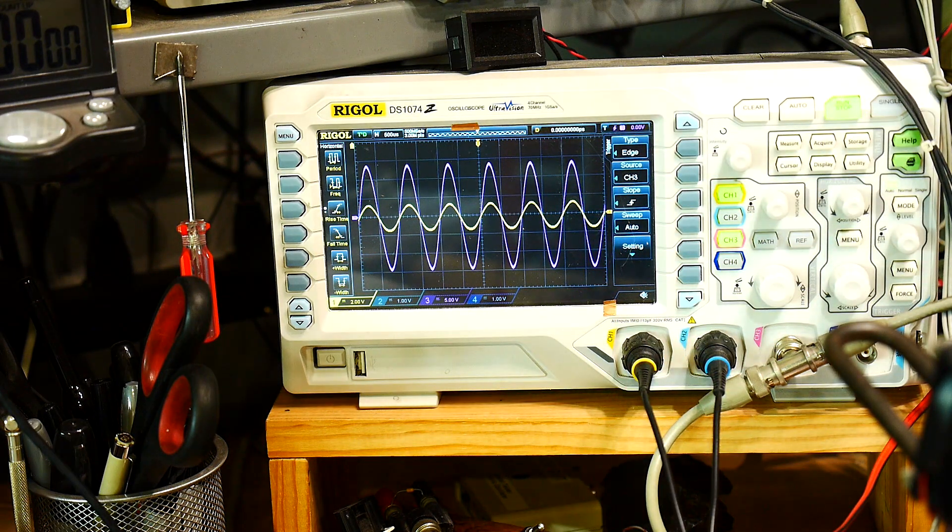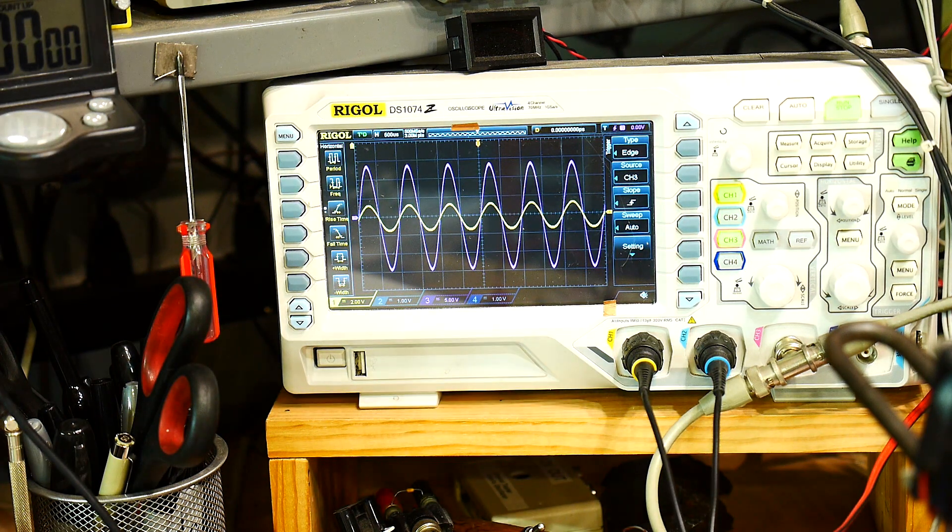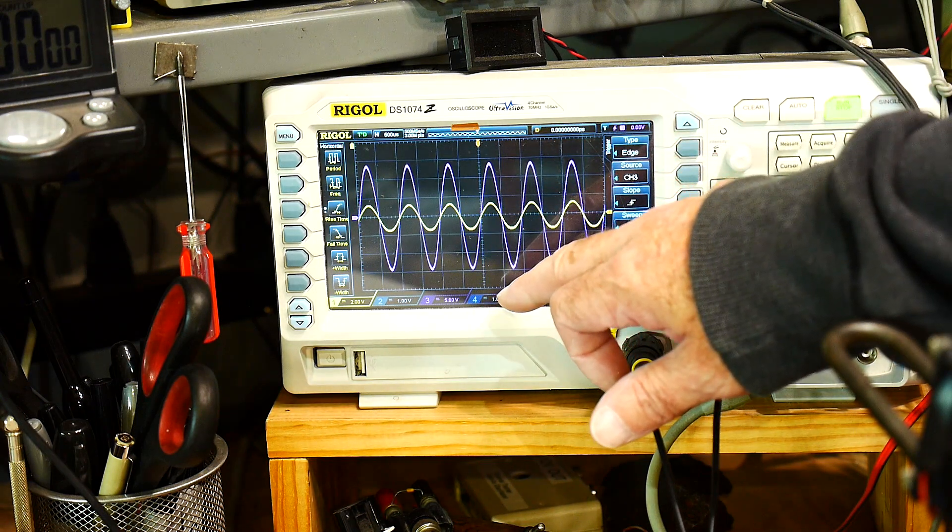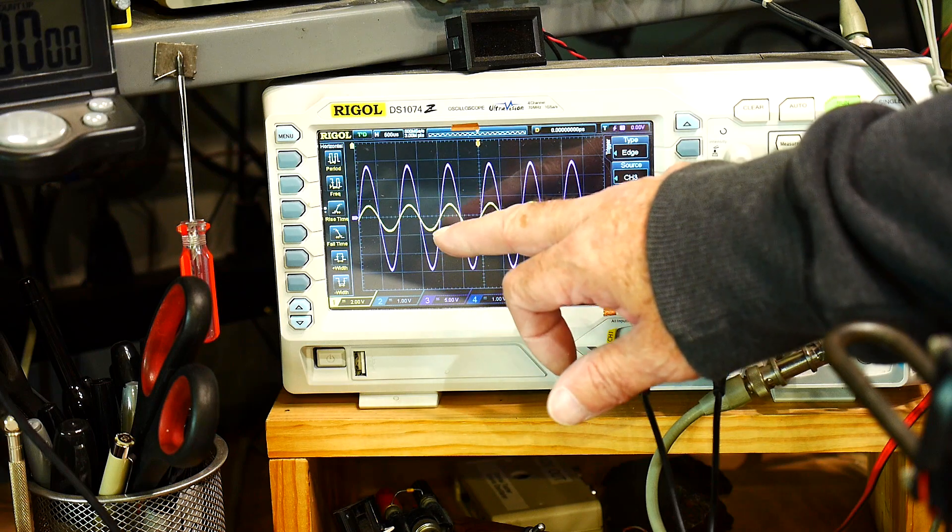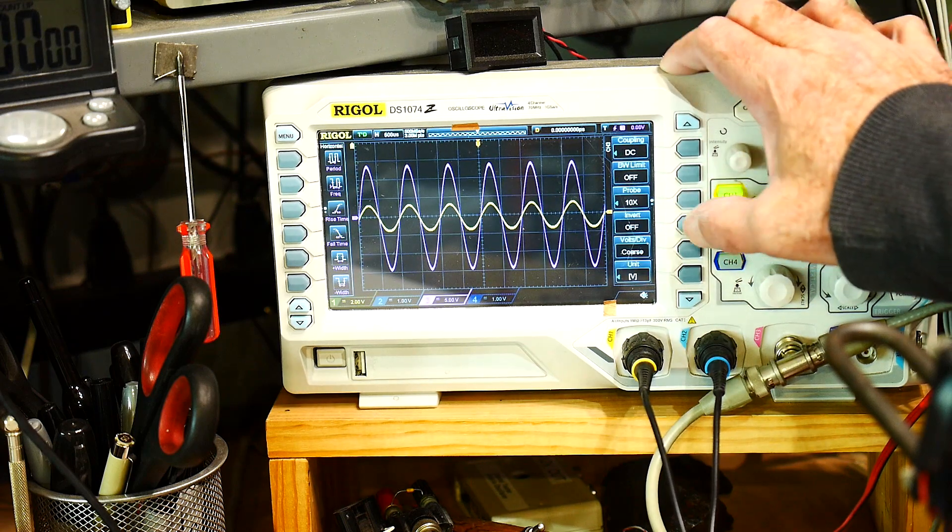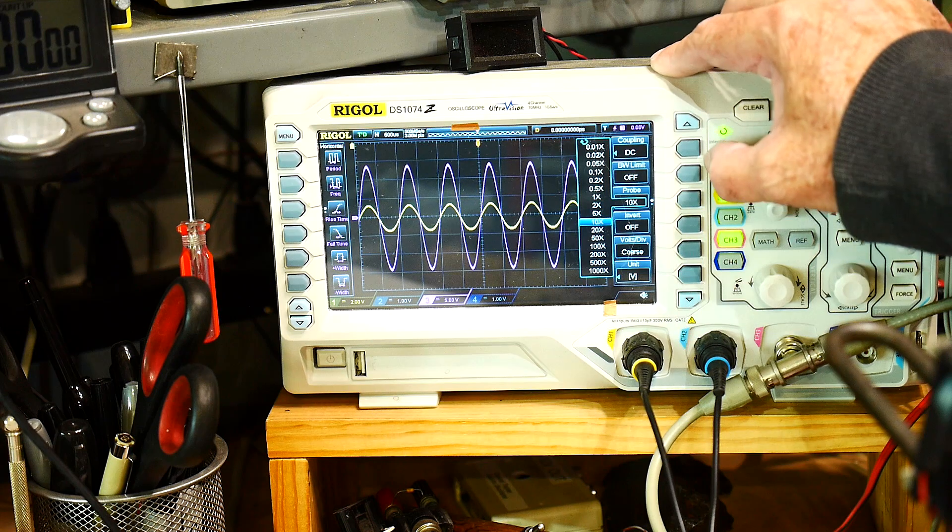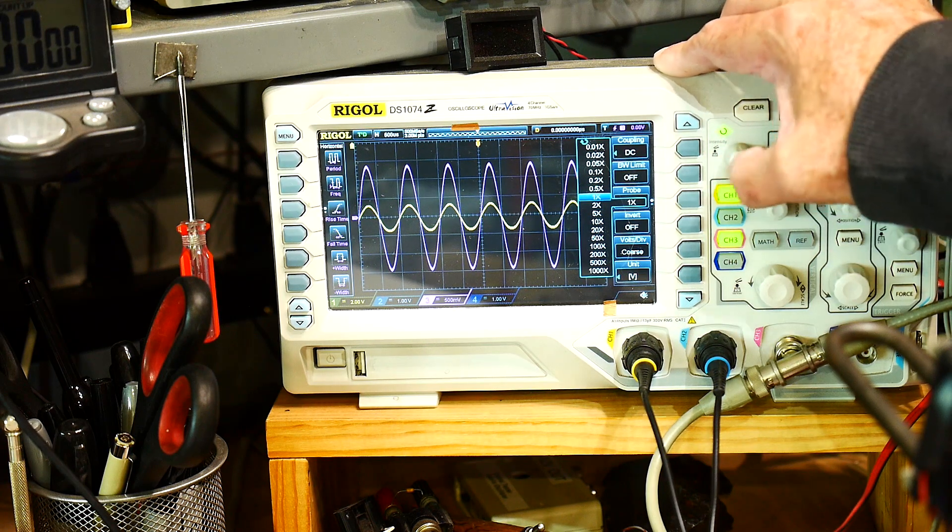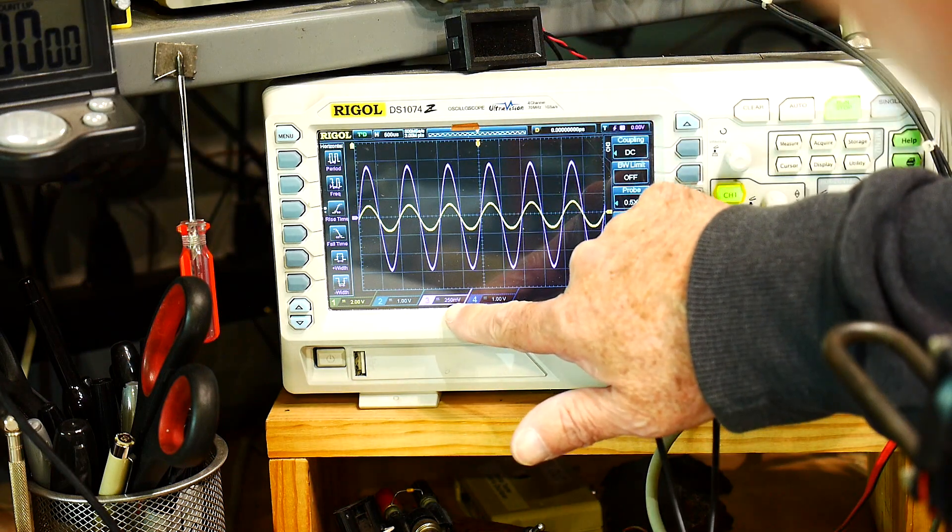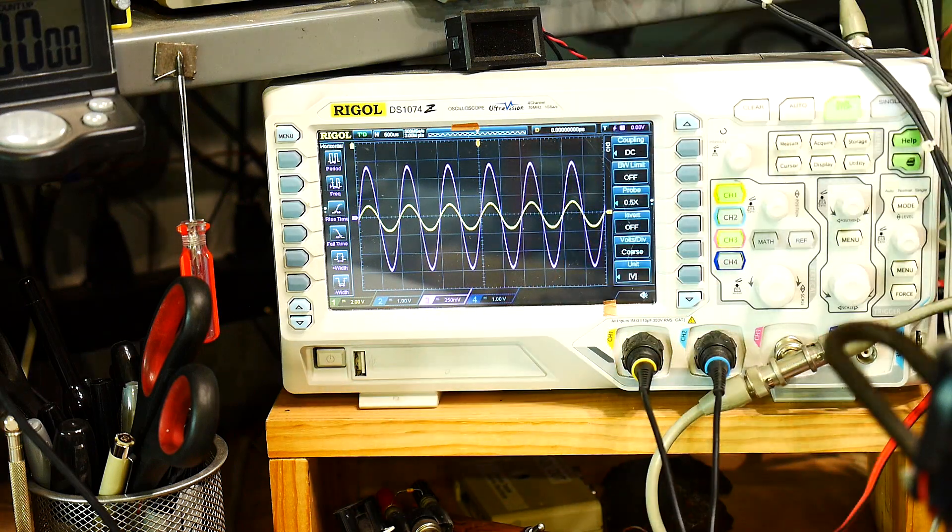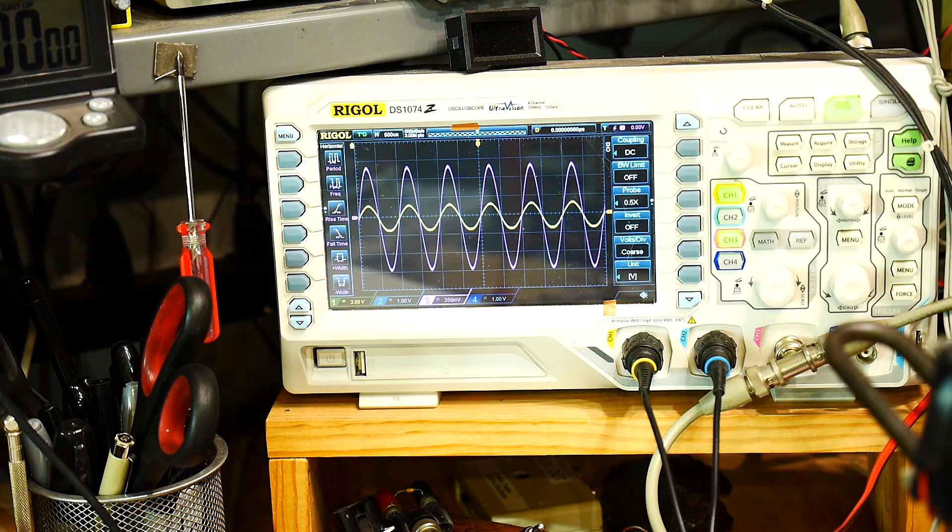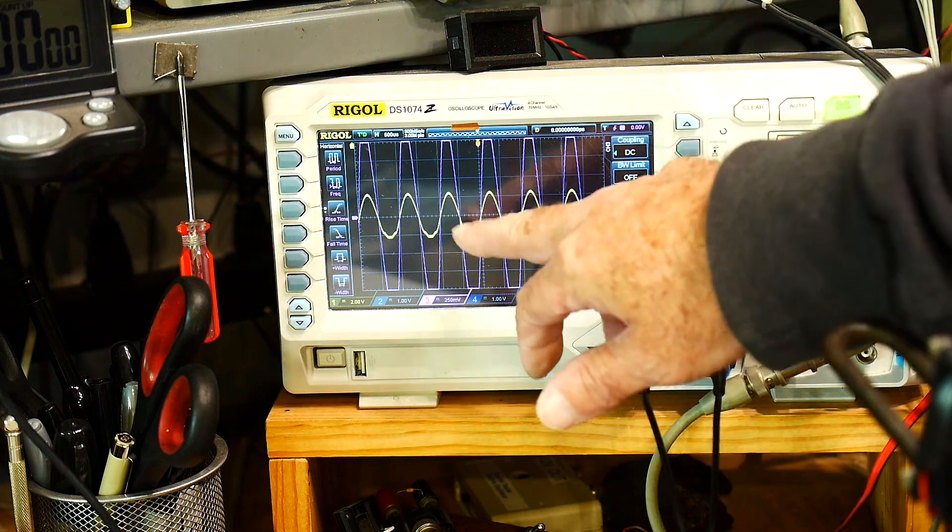And let's see, we have times one. So let's put in times one so it'll read out correctly. There we go. So 250 millivolts per division and two volts per division. So we have amplification. This is the input. This is the output. And if I crank up the input, then the output starts to clip at the bottom here. Otherwise it's working pretty good.